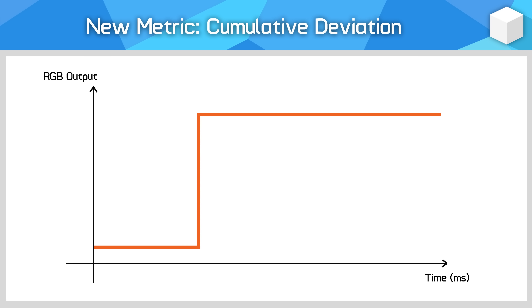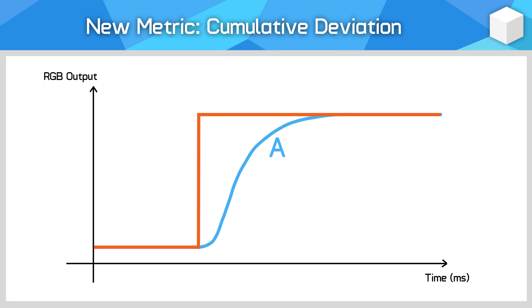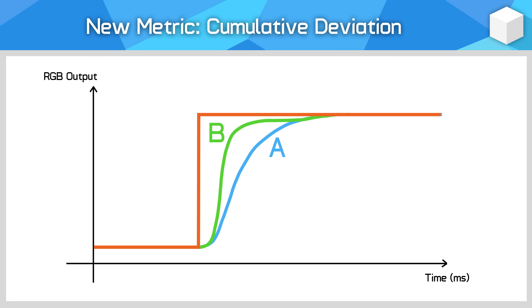Among a few other minor improvements, I'm also introducing a new data point called cumulative deviation. Back to our response time graph — first let's plot the ideal response, which is a straight square edge that instantly transitions. Now let's say we have two transitions: Transition A is very slow to begin with, then quickly completes; Transition B is very quick to begin with, but more slowly completes. If we measure the transition time for both, we get the exact same value, but in reality one type is better than the other.